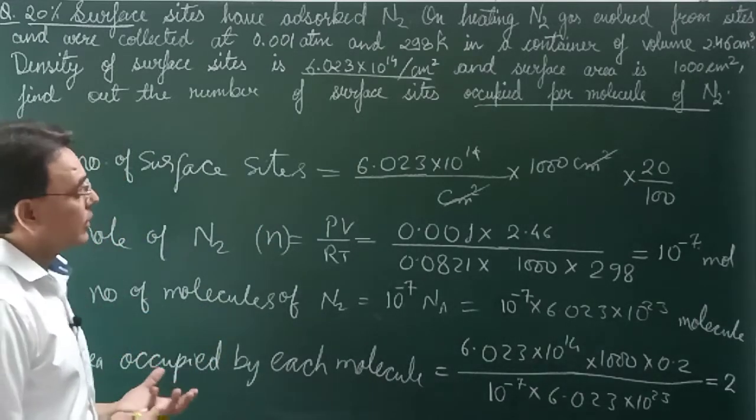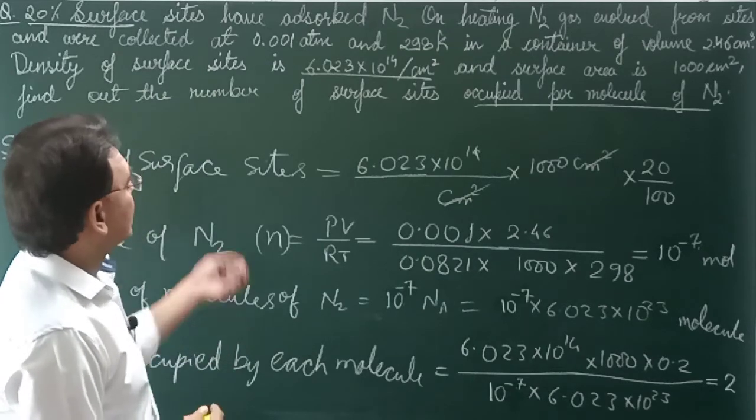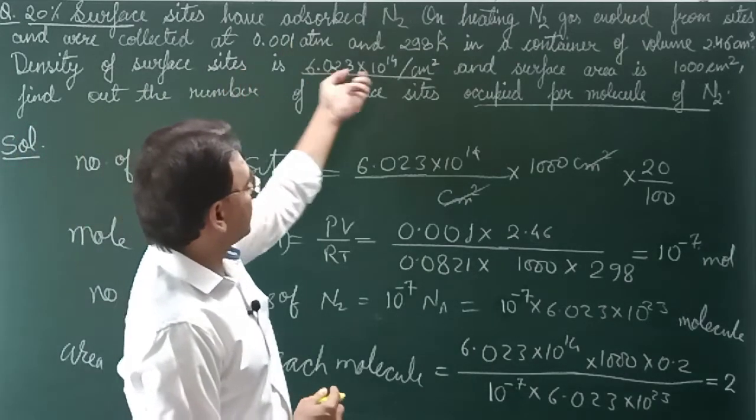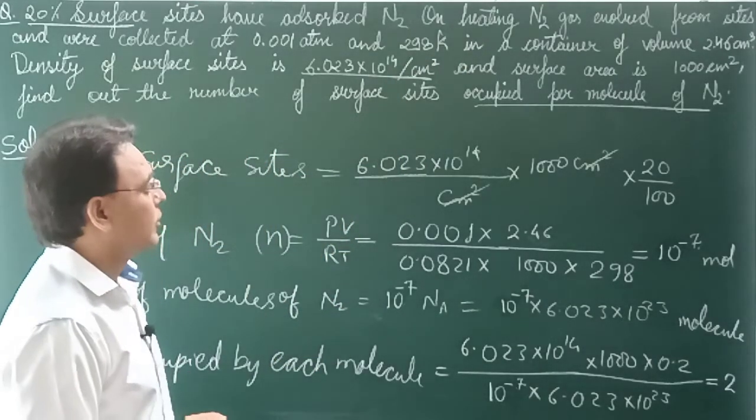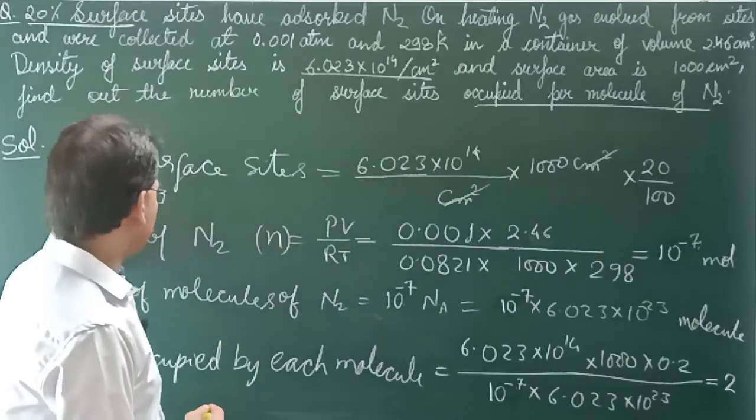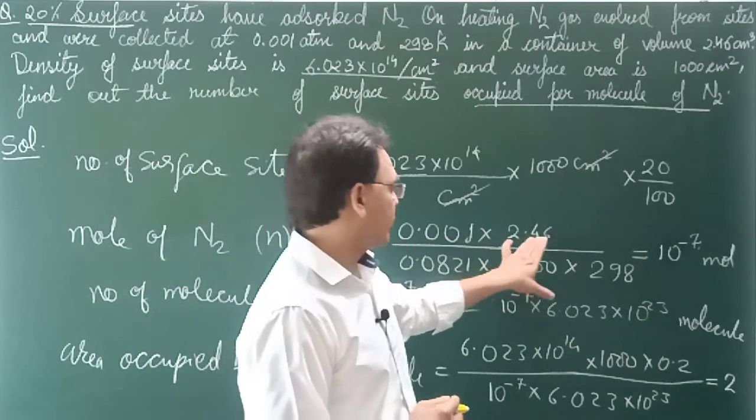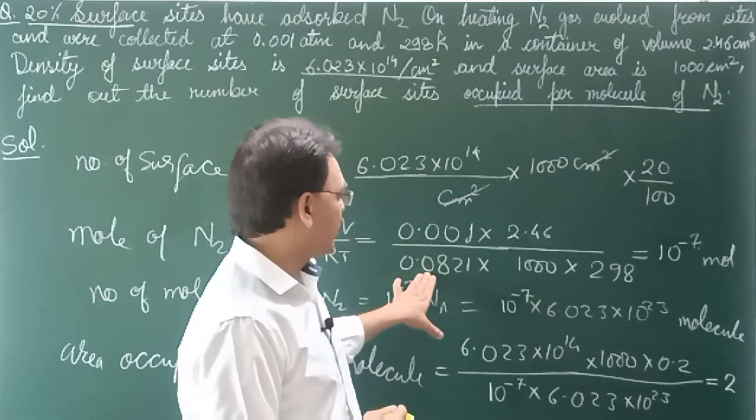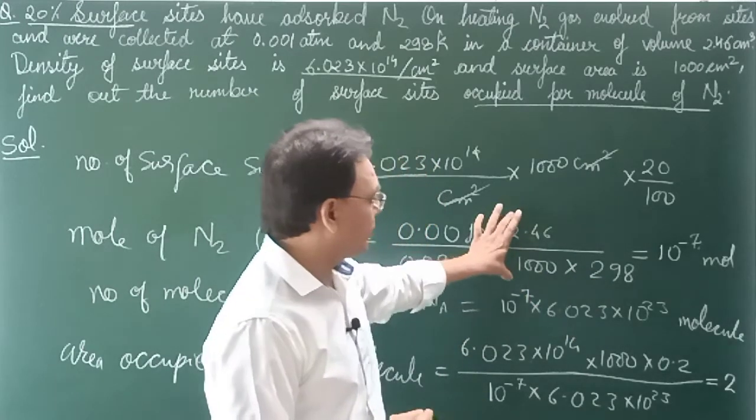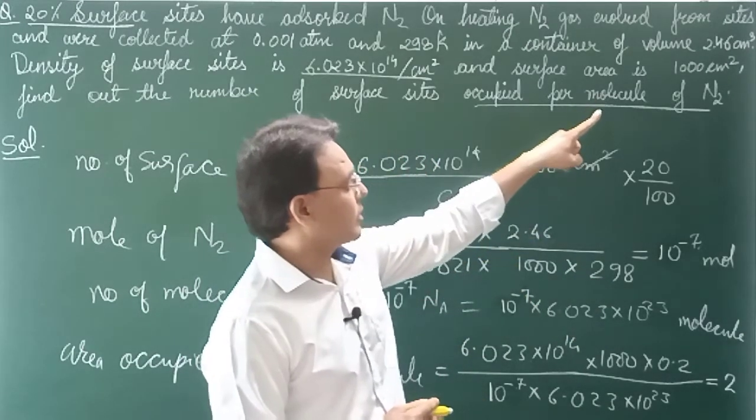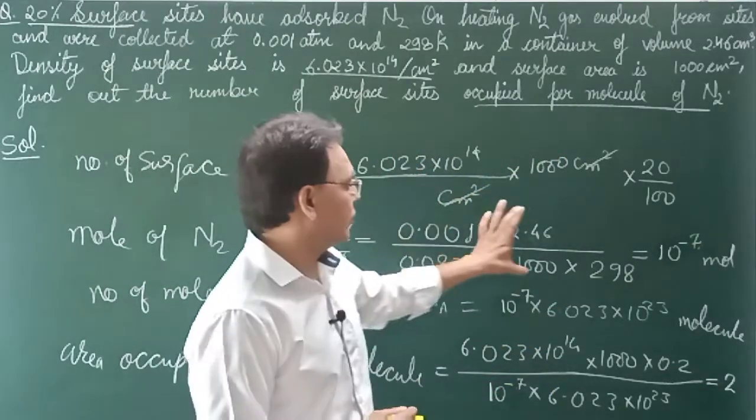Now how many molecules are there? You see, when N2 evolves from the surface site, it's collected at 0.001 atm and 298 Kelvin. Its volume is 2.46 cm³. This means we can write moles of N2 as PV upon RT: pressure 0.001 times 2.46 divided by R value 0.0821 times 298 Kelvin. And this 1000 is because we write volume in liters. That 2.46 cm³ means 2.46 ml, and in PV equals nRT volume is written in liters.